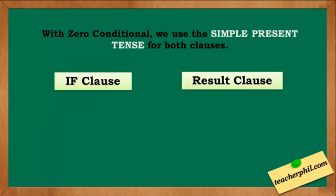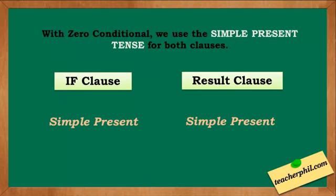With Zero Conditional, we use the simple present tense for both clauses — the IF clause and the RESULT clause.